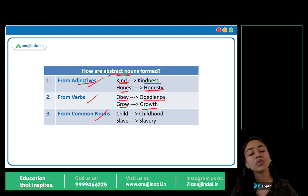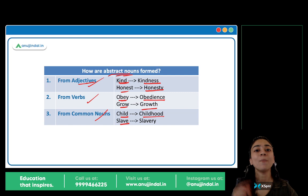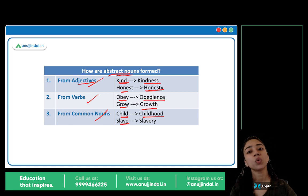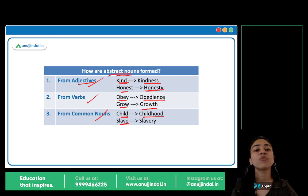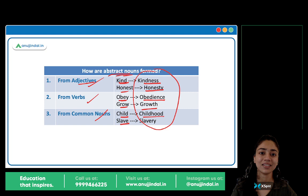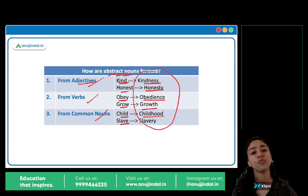Common nouns se bhi abstract nouns bante hain. Jaise child, slave — child becomes childhood, man becomes manhood, boy becomes boyhood, woman — womanhood. Slave — slavery. Toh slave common noun hai, slavery abstract noun hai. Yeh sare abstract nouns hain which represent intangible ideas — things which do not have a physical form.